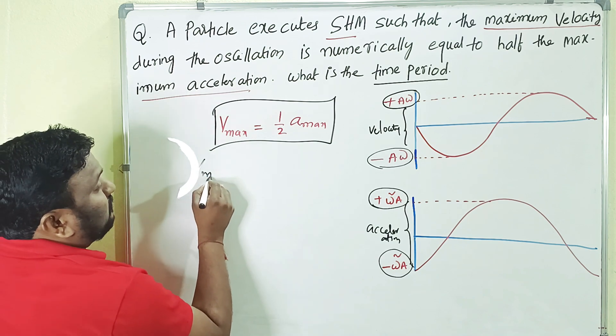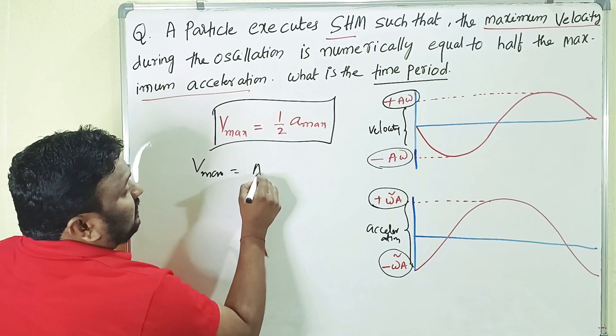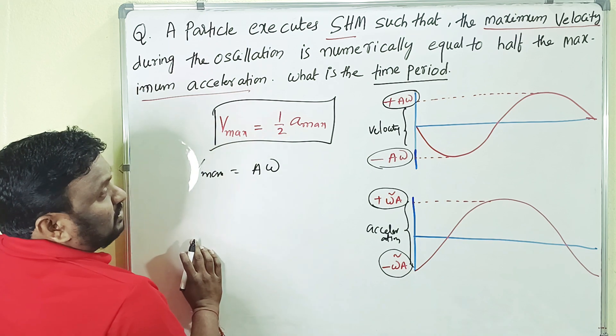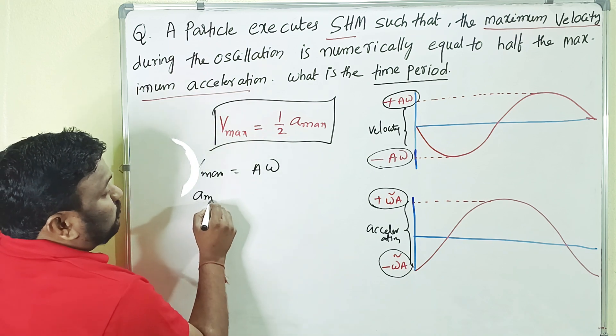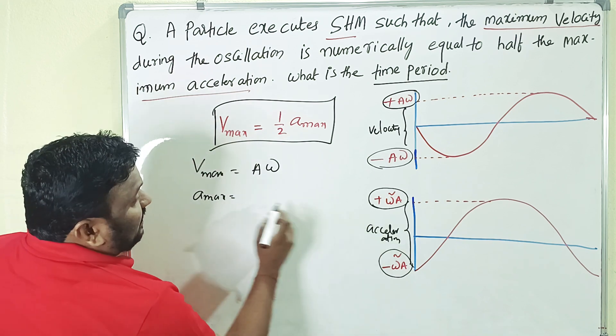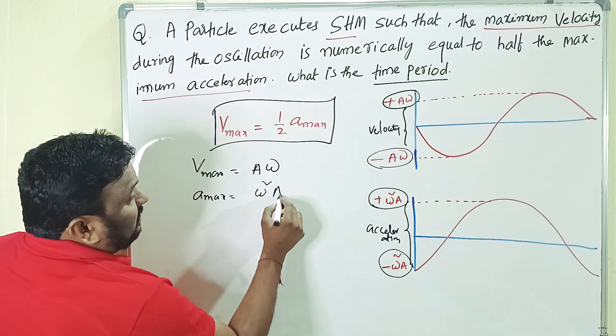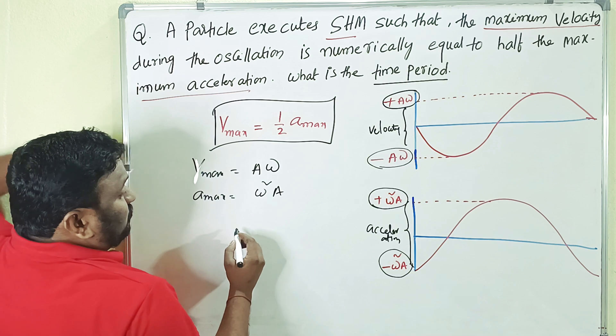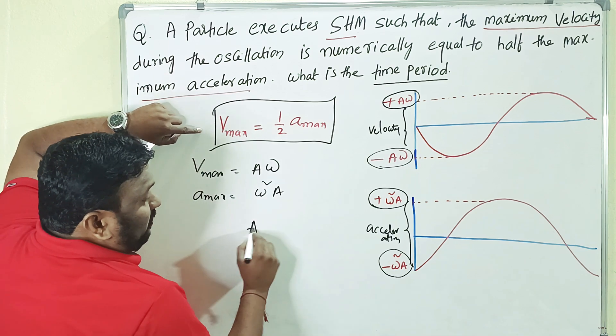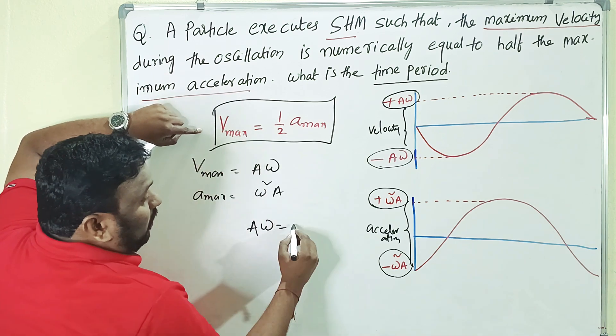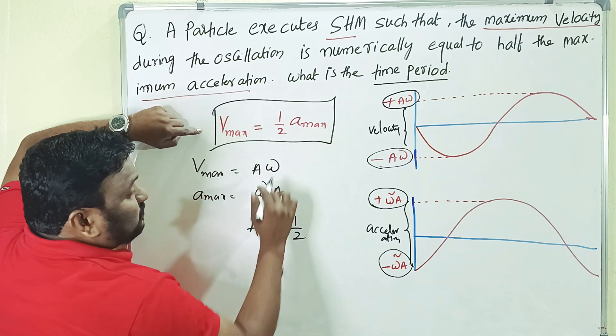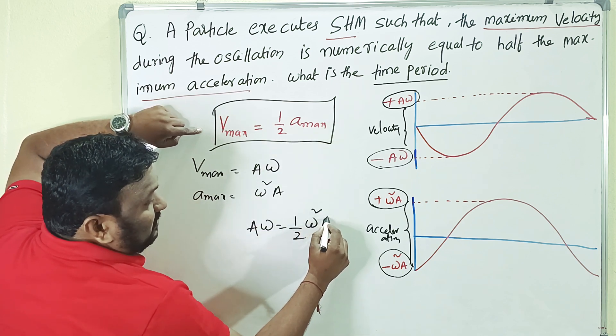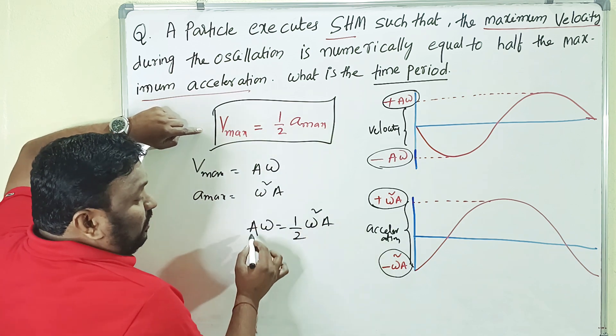So that's why here from those graphs, what I would write? V maximum is equals to what, children? A omega. And A maximum is what, children? Omega squared A. Now you substitute these formulas in that condition. V maximum, A omega, is equals to half, A maximum is omega squared A.